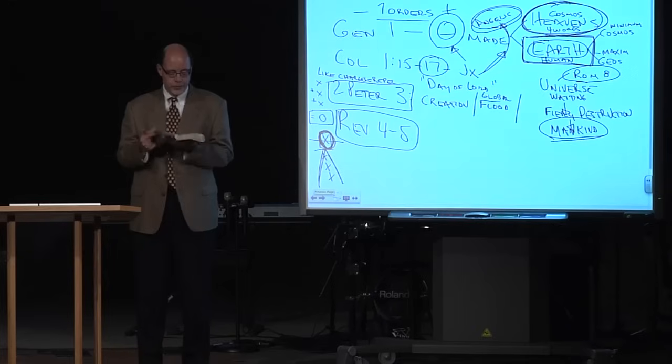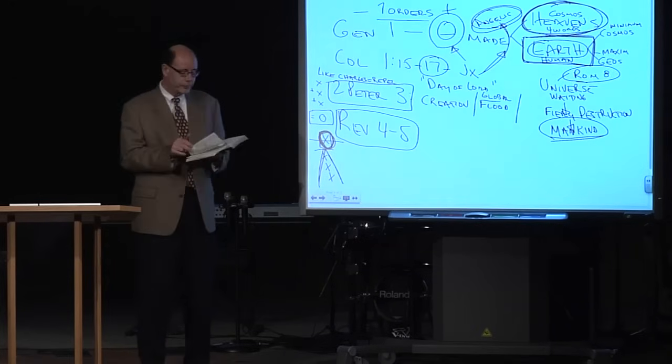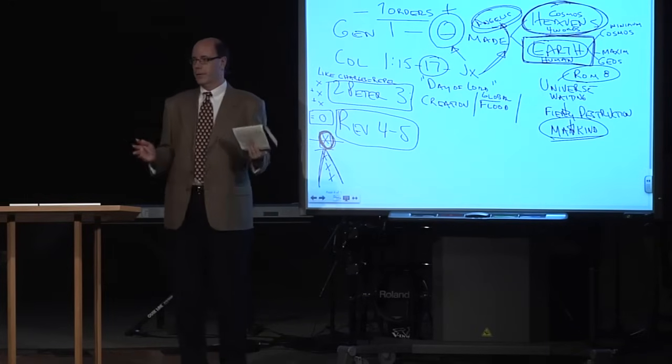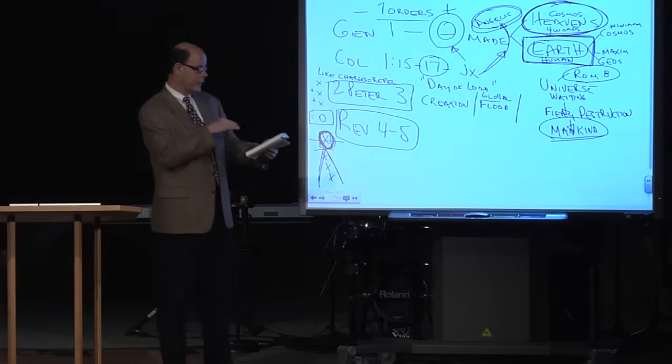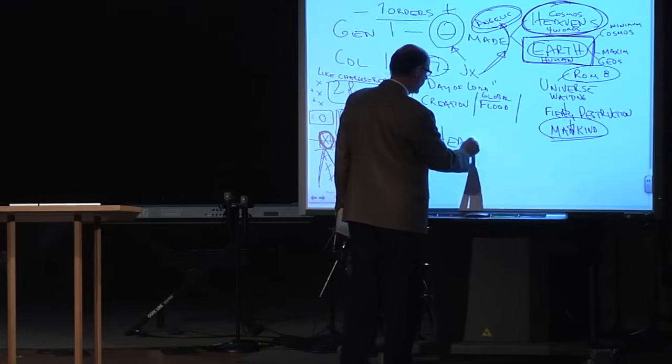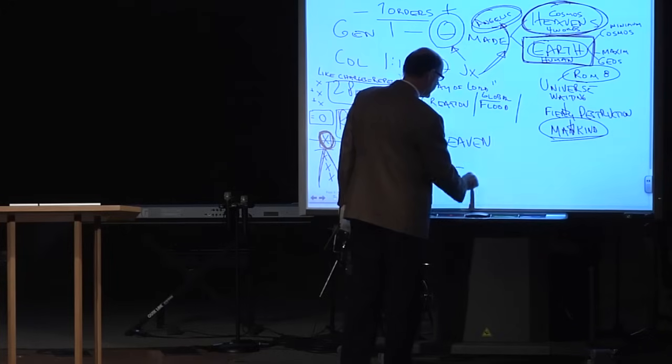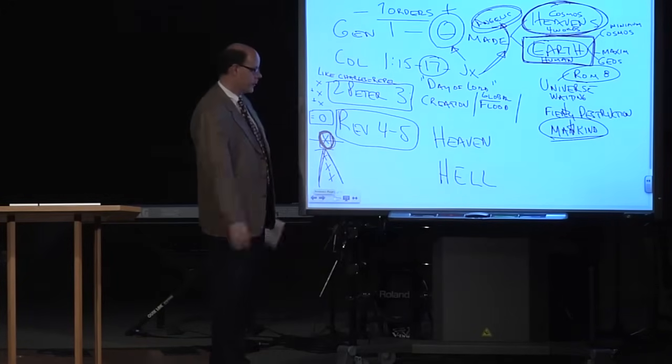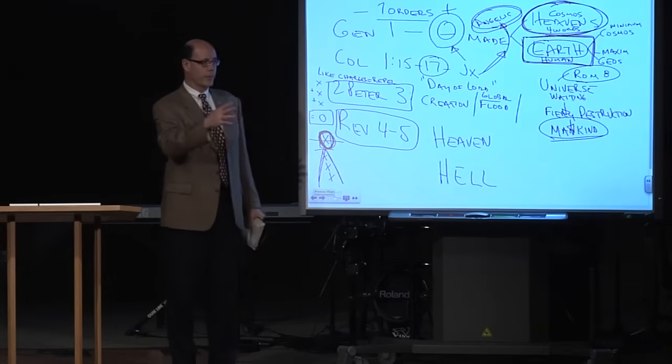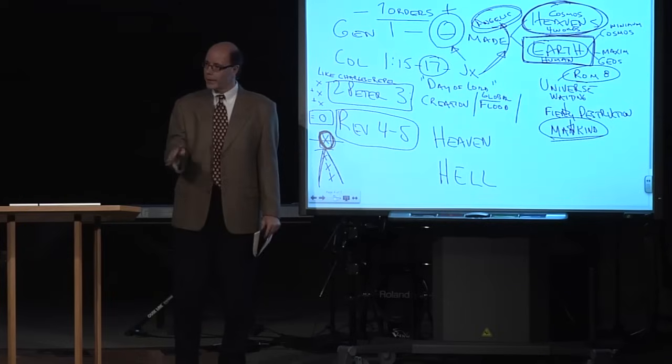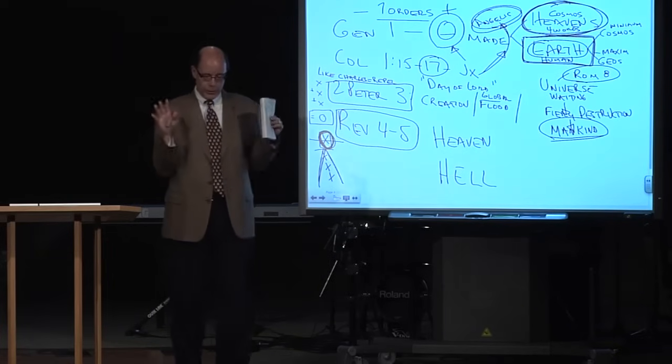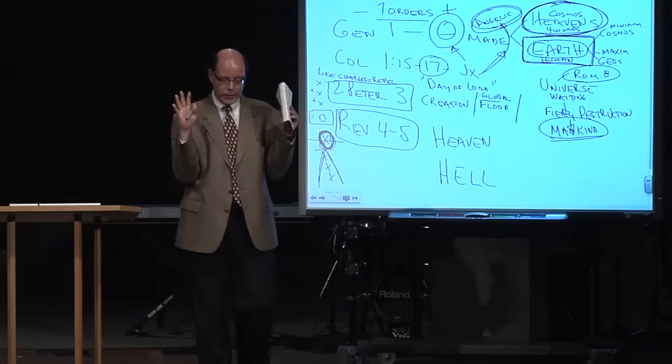But look at chapter 4 and 5 of Revelation. And the last thing I want to show you is, why do we say that there are no other aliens out there, and other planets, and other places where people are? Because everything is going to be destroyed. The only thing that's going to last is there's a heaven. That's where God's throne is. And there's a hell, which is the, remember, hell in English comes from the word Ge'ena or Gehenna or the Valley of Hinnom, the garbage dump of Hinnom.